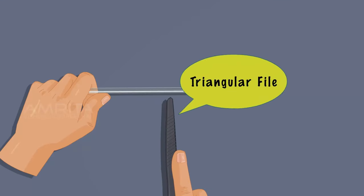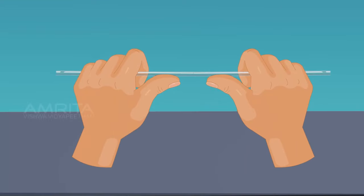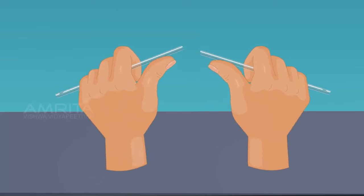Hold it firmly and make a single deep scratch with a triangular file. Place the thumbs on each side of the scratch at equal distances from it and with pressure give a quick bending motion until it breaks smoothly. Thus, we got two tubes from a single tube.